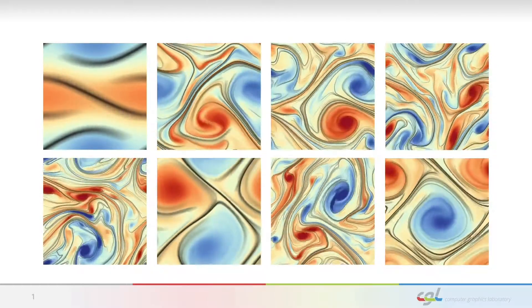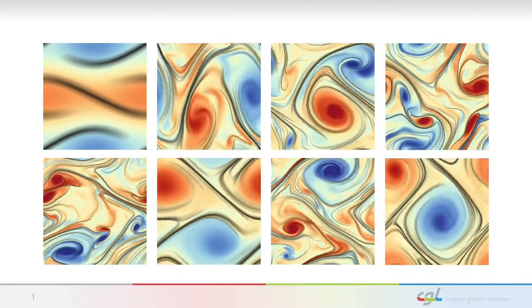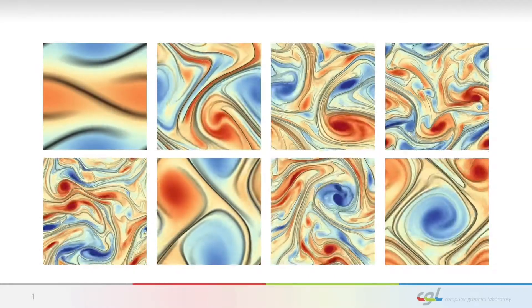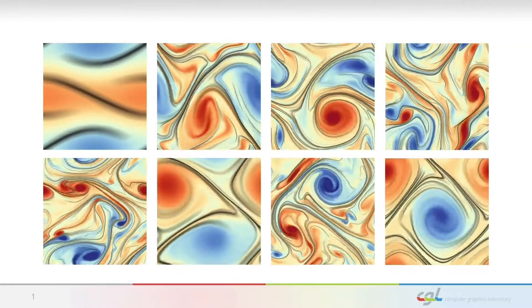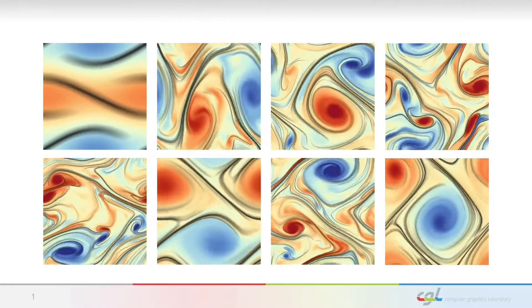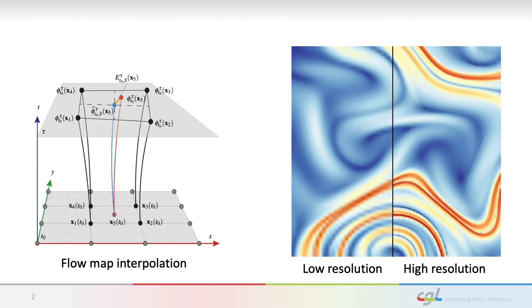To spur data-driven research in FlowViz, we simulated and released a 16TB dataset containing 8000 unsteady 2D vector fields. We demonstrated its usefulness on a Lagrangian transport sampling problem by employing CNNs on different simulated and measured datasets.